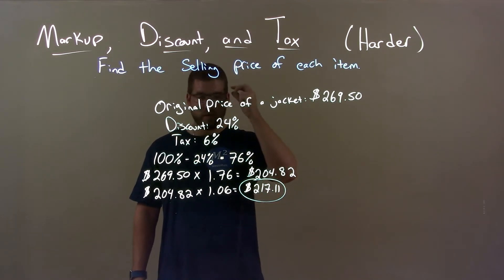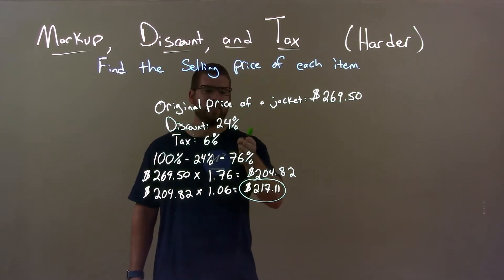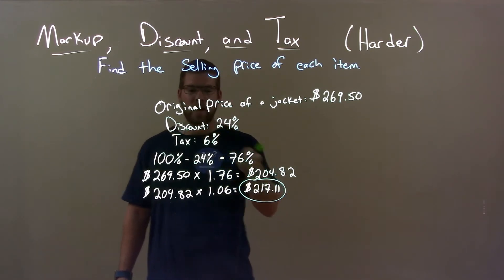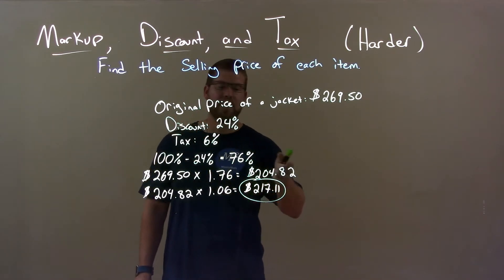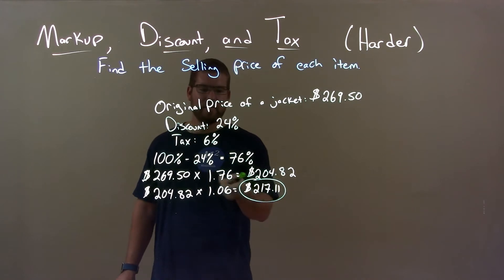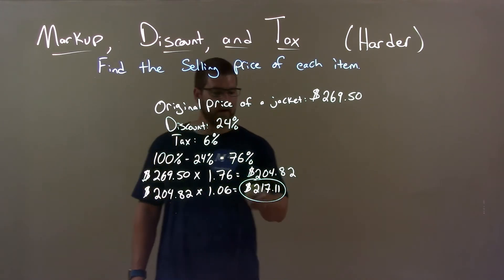Well, we first recognize that 24% discount means we're paying 76% of the original price. We calculate that to be $204.82. We apply our tax of 6%, and we got a final answer of $217.11.